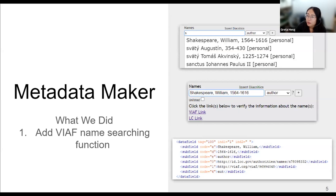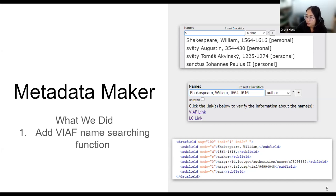I'm going to introduce some linked data features we added to Metadata Maker this year. The first is adding Virtual International Authority File, VIAF, name searching function. The VIAF name autocomplete drop-down list in the first picture was developed by our programmer Darren Kudeki. We used the VIAF autocomplete API to retrieve the personal name's label, VIAF URI, and LC URI. When a name is selected, the links to both URIs, if they are available in VIAF, will be presented on the web page.